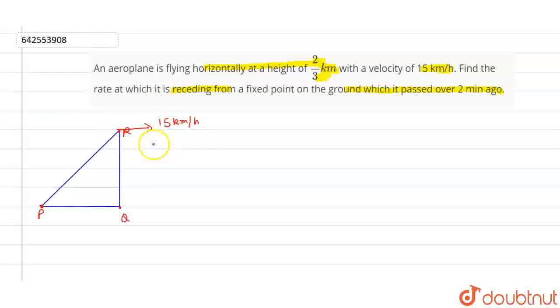And it is given that the height here is 2 by 3 km. It is said that 2 minutes ago, 2 minutes before, suppose that point will be P.